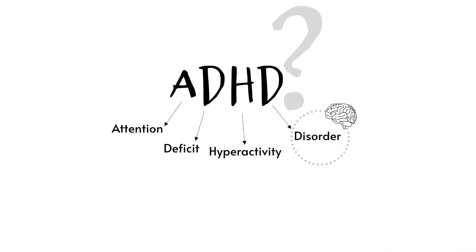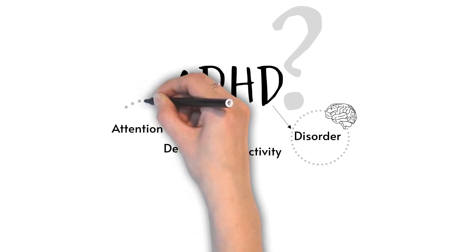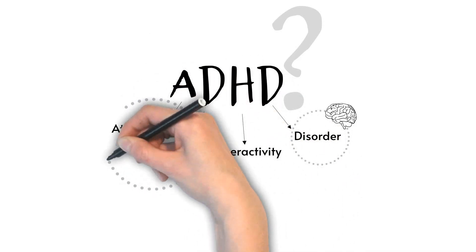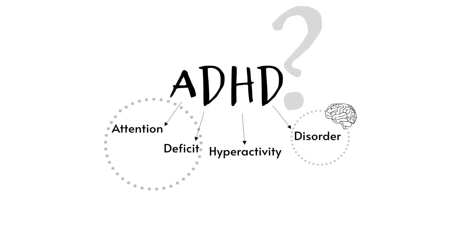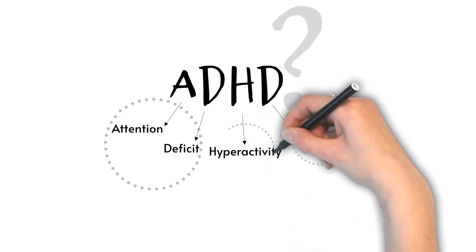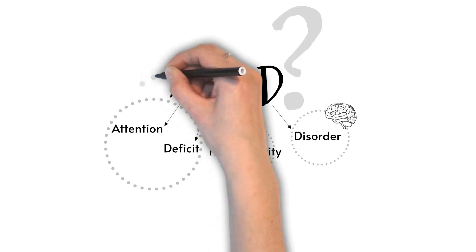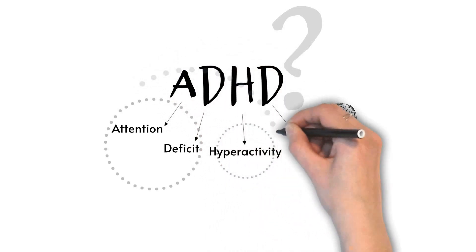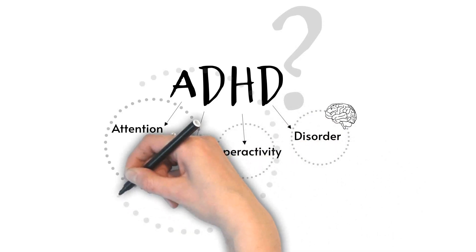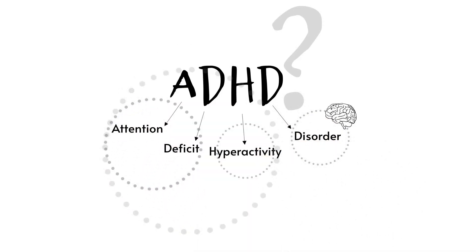There are three subtypes of ADHD diagnosis. Children with a predominantly inattentive subtype have more inattentive behaviours and less hyperactive behaviours. Children with a predominantly hyperactive subtype have more hyperactive behaviours and less inattentive behaviours. Children with a combined inattentive and hyperactive subtype have a mix of both.